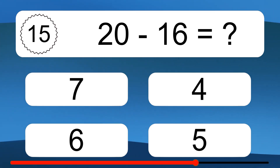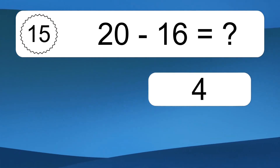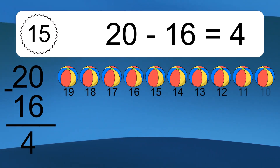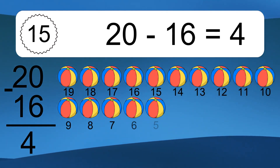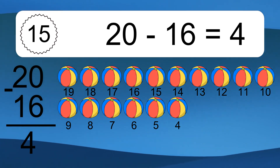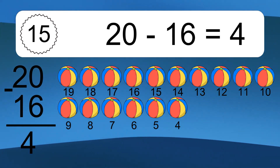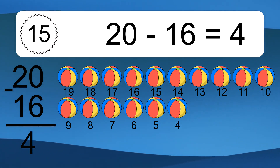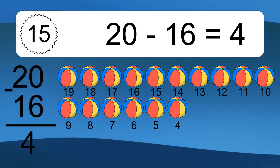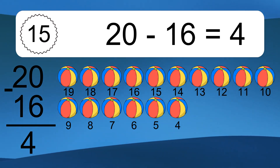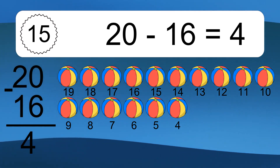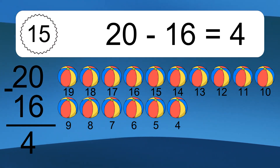20 minus 16 equals 4. Let's count it: 19, 18, 17, 16, 15, 14, 13, 12, 11, 10, 9, 8, 7, 6, 5, 4.